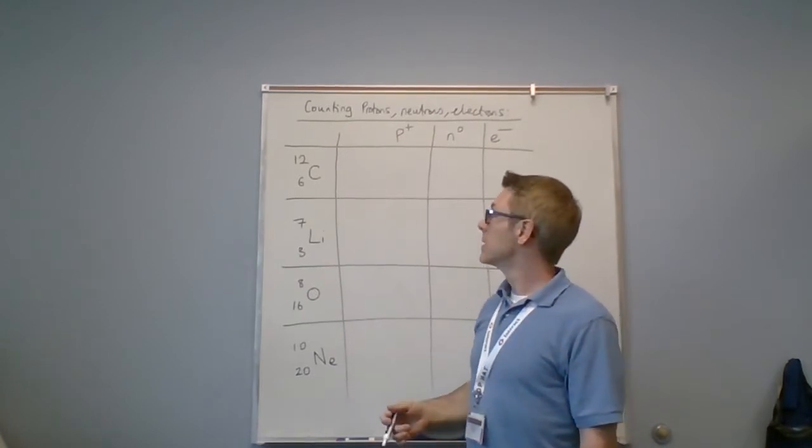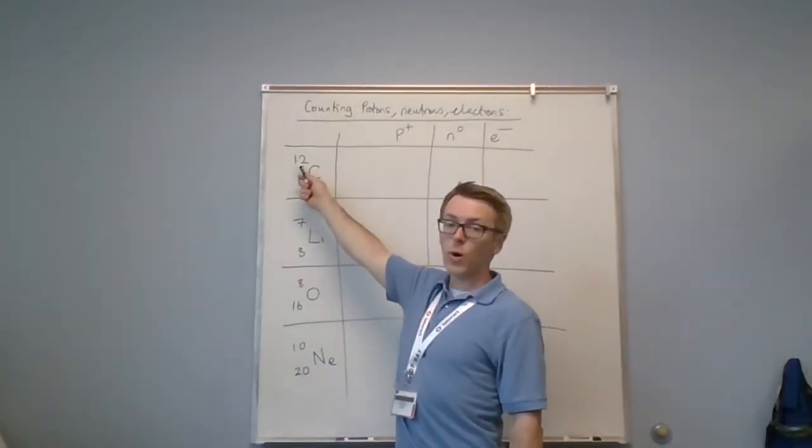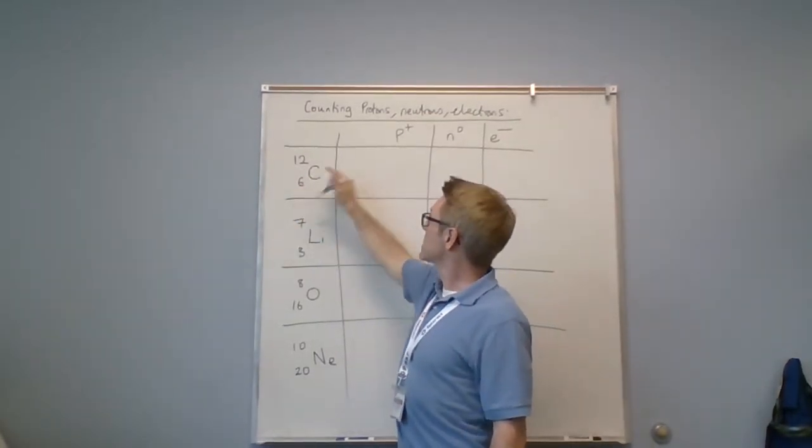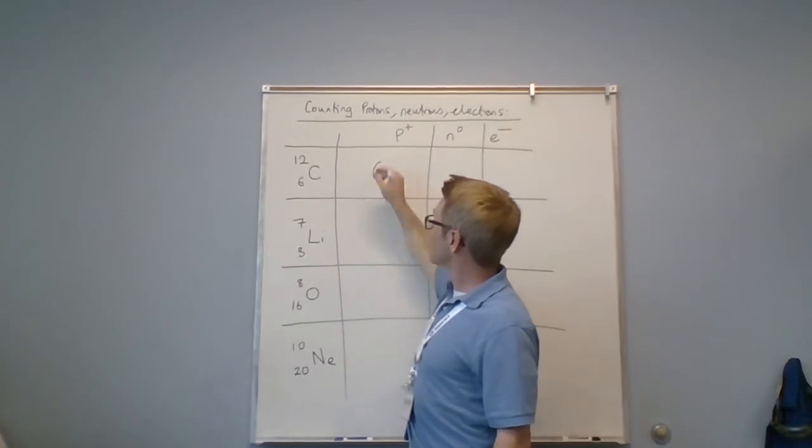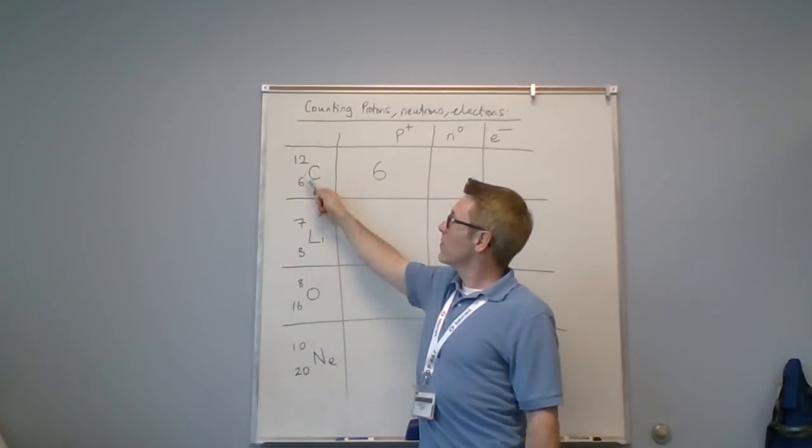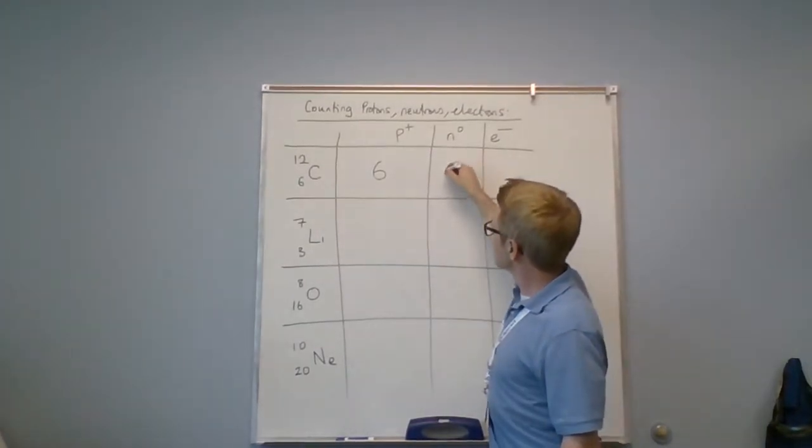Z, which equals 6, is the number of protons. A minus Z is the number of neutrons, so 12 minus 6 is 6. That's the number of neutrons.